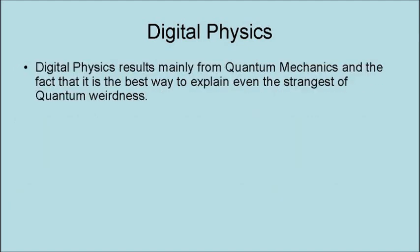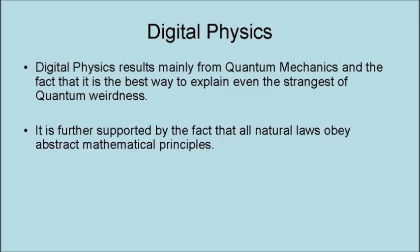Digital physics results mainly from quantum mechanics and the fact that it is the best way to explain even the strangest of quantum weirdness. It is further supported by the fact that all natural laws obey abstract mathematical principles.